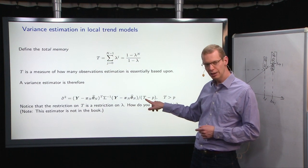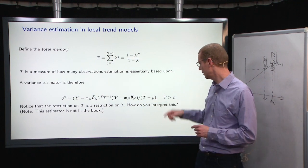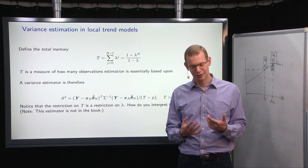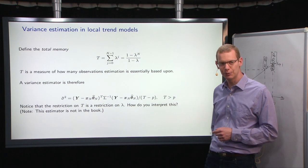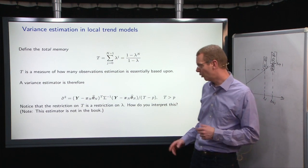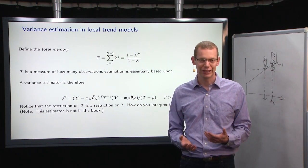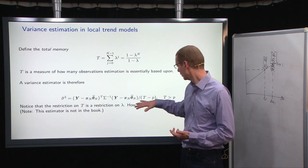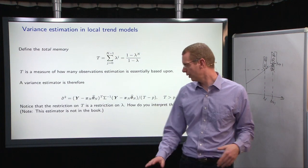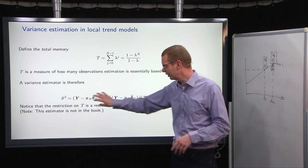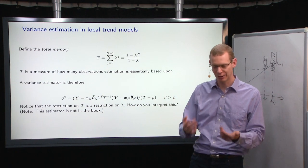And then we normalize by T minus p. Before we used n, but now we essentially have less observations. So T minus p is a good estimate for what to use. Of course, then we also need to restrict T to be greater than p, which is not always the case. So this provides a restriction on the forgetting factor that we can use in practice. The method will work for lower, but you can say the interpretation of the variance will not work in this sense. Then you need to use another estimator.